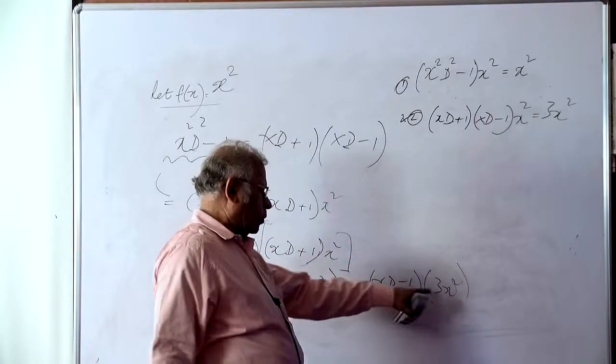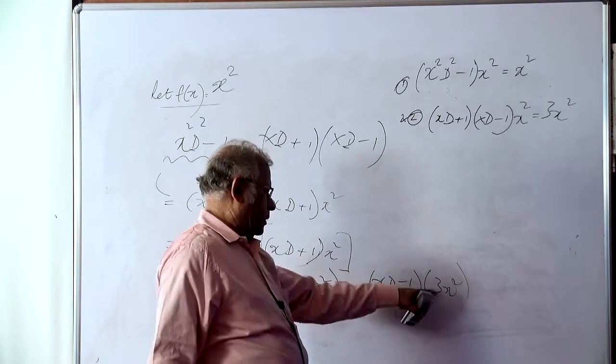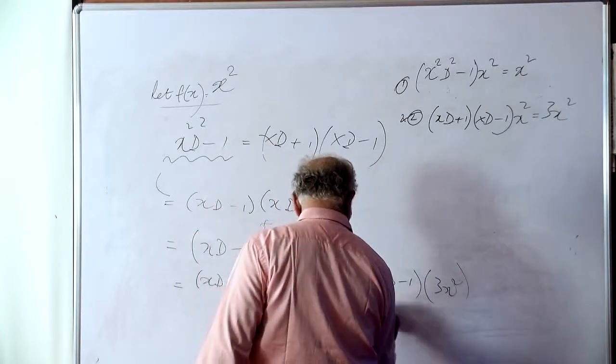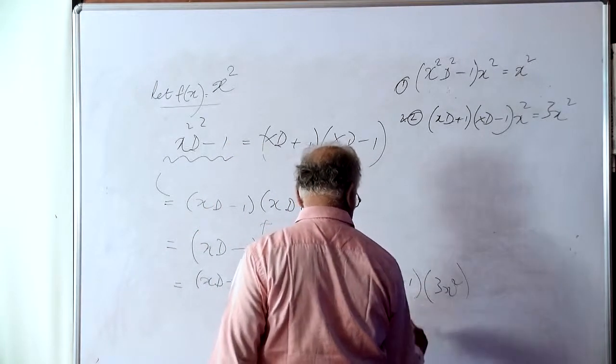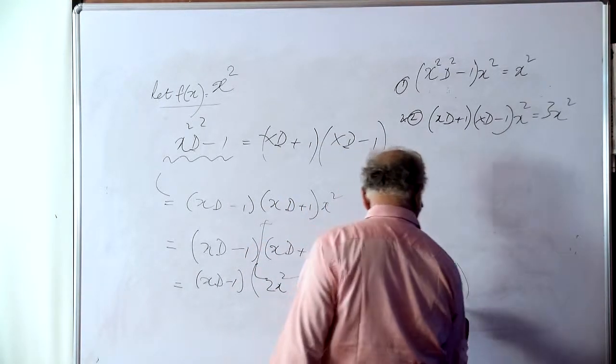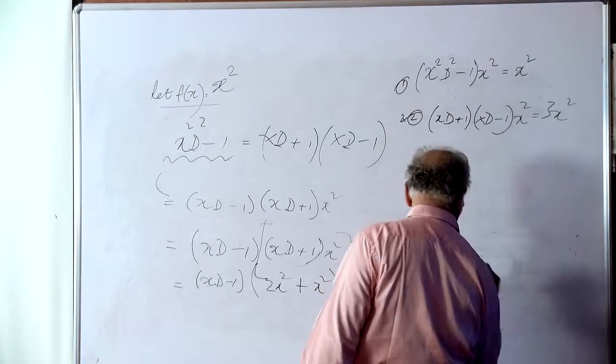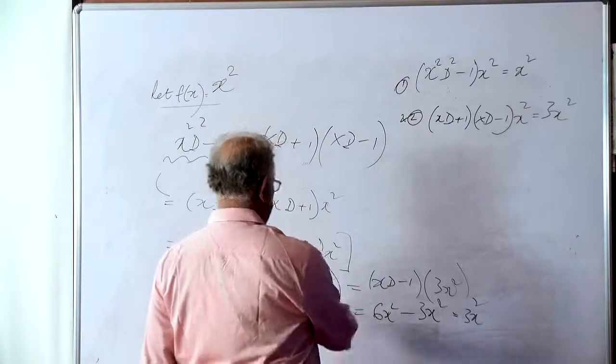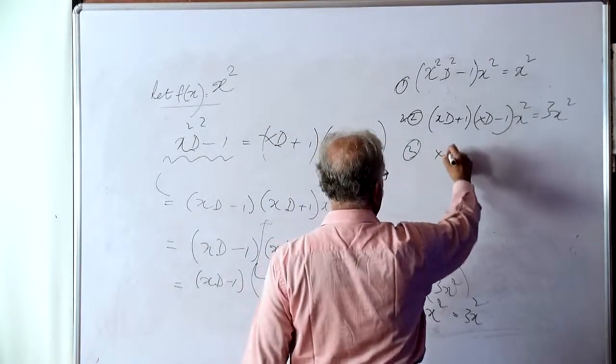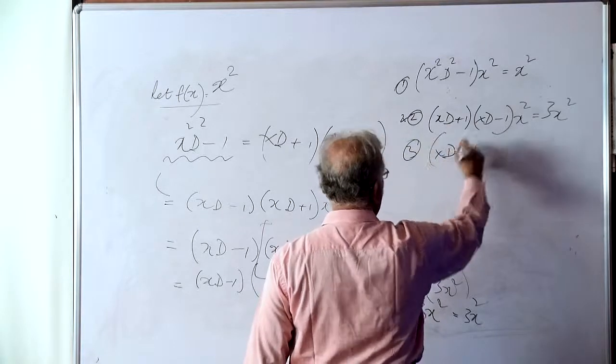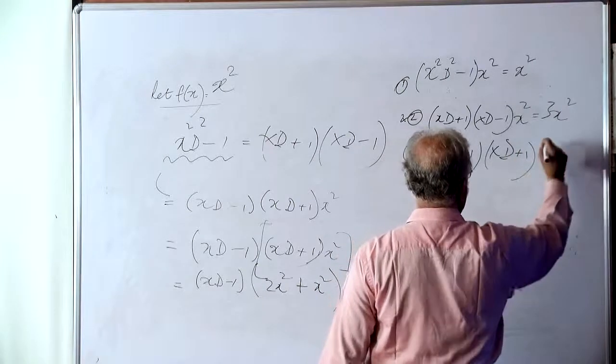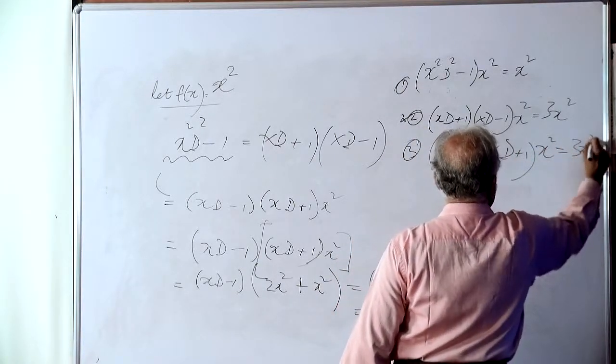xd on 3x squared minus 1 on 3x squared, that is 3x squared. So this part tallies, apparently the commutative law, (xd minus 1) into (xd plus 1) operating on x squared is 3x squared again.